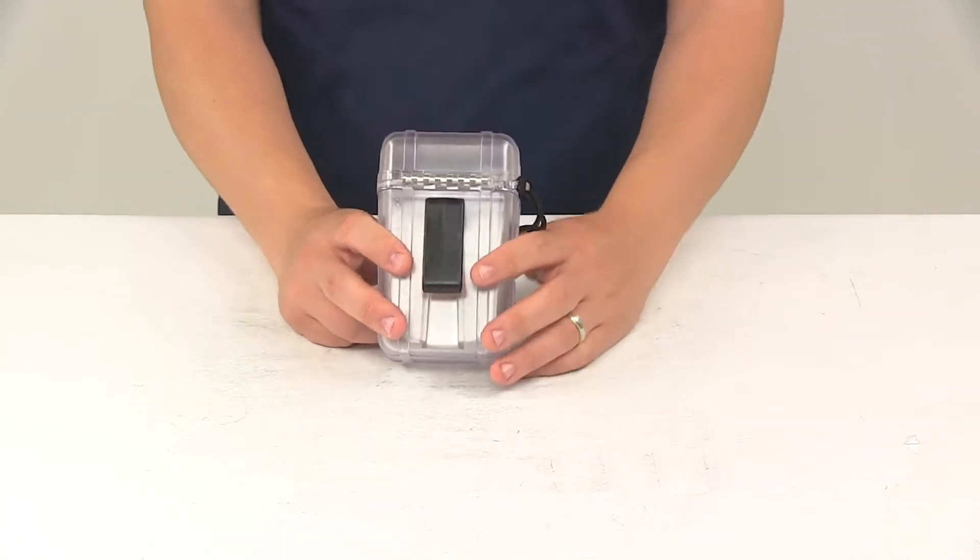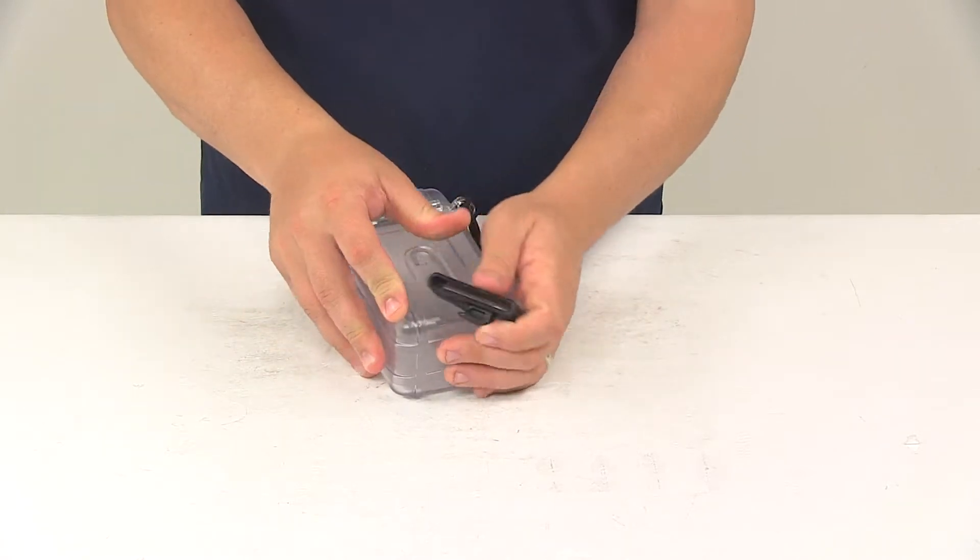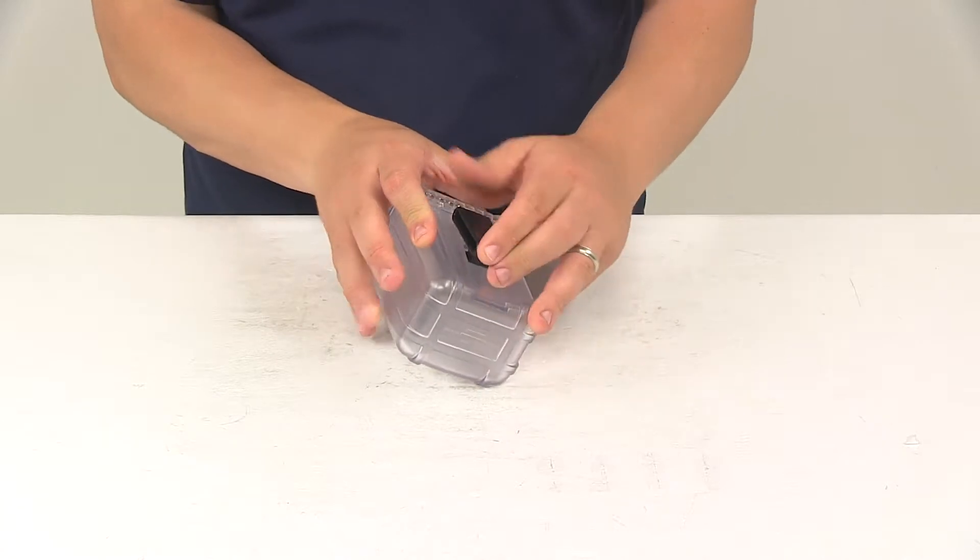It comes with a lanyard and a belt clip. It just slides in and out of the groove here on the back of the unit.